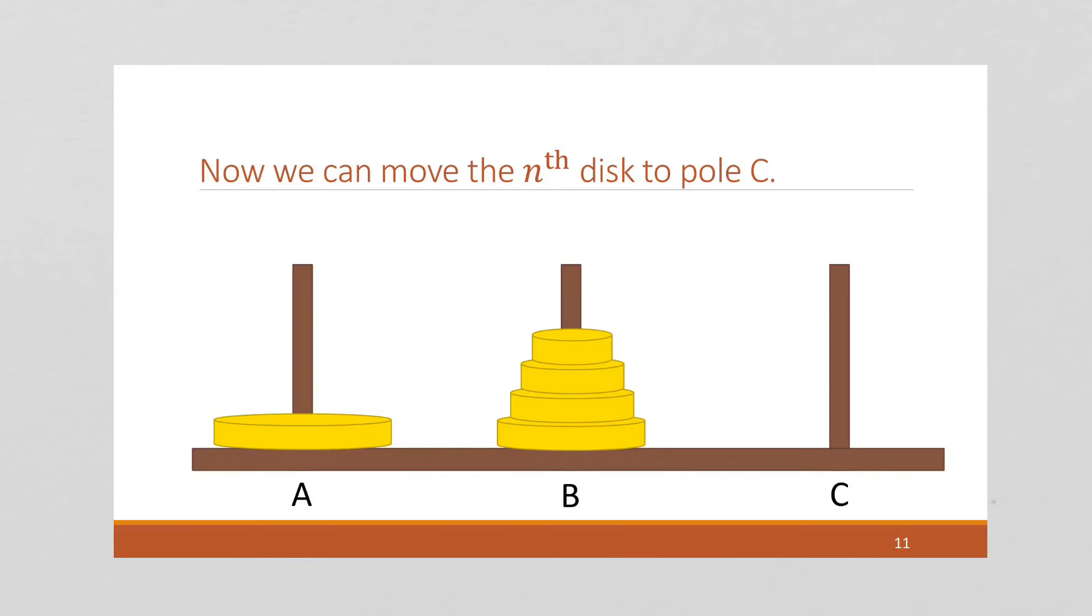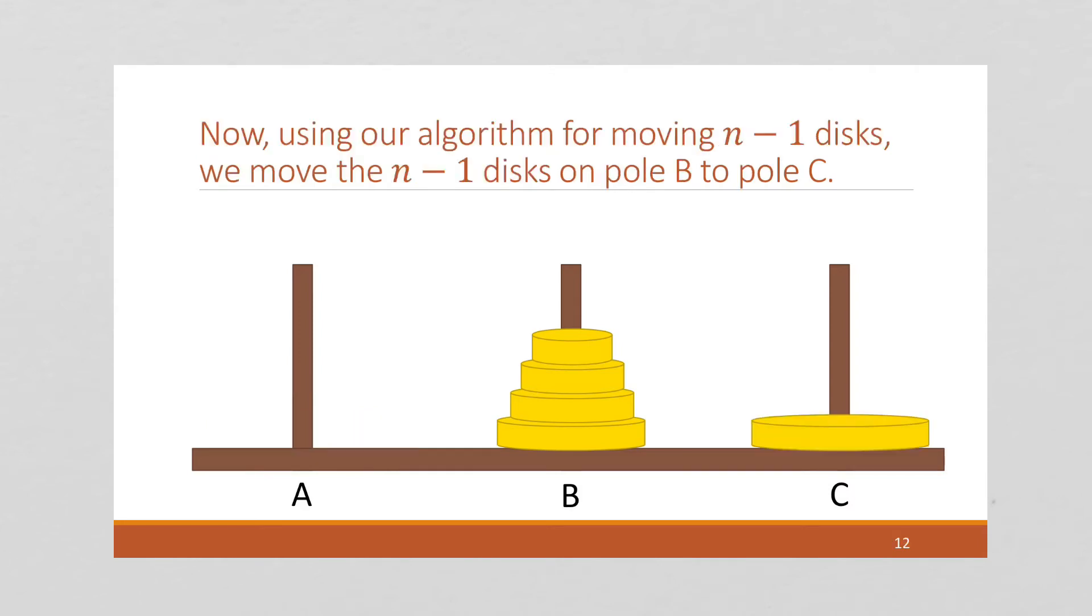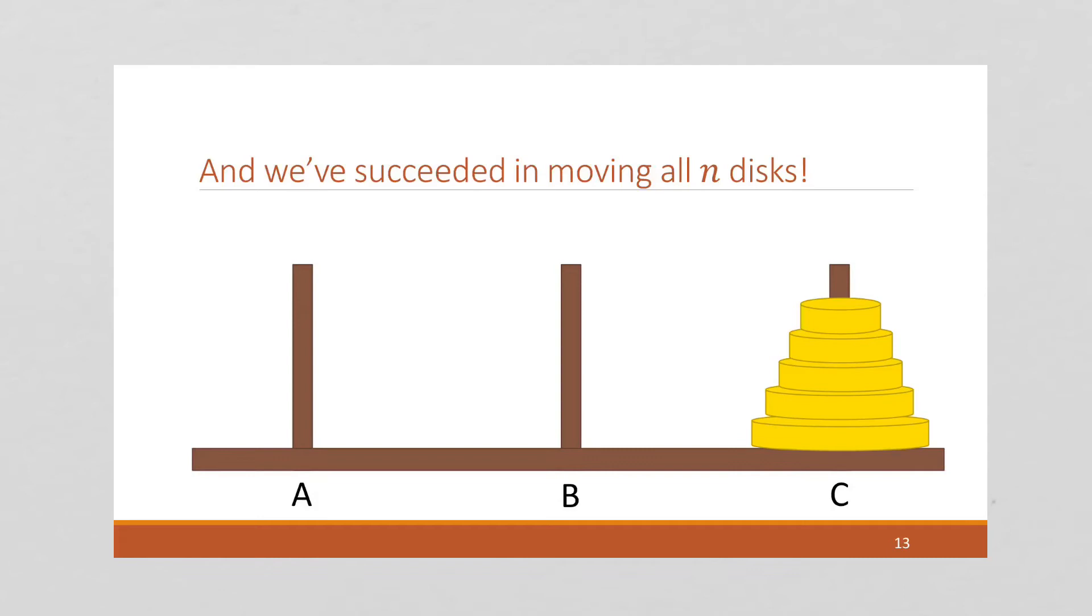Now that we've got our n minus 1 disks moved to the middle pole, we can take that last disk and move it to the pole C. Now remember, we had some kind of an algorithm. We don't necessarily know how it works, but we had an algorithm that lets us move n minus 1 disks. So I can grab these n minus 1 disks and move them on to pole C. And now we've succeeded in moving all n disks.